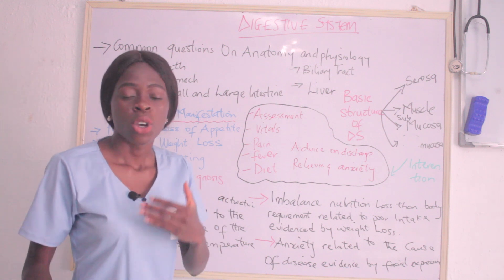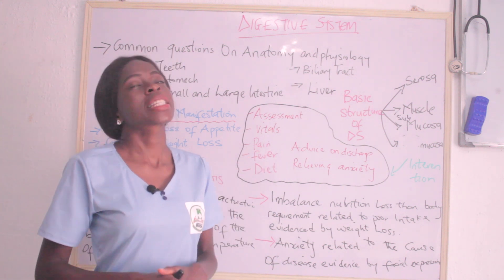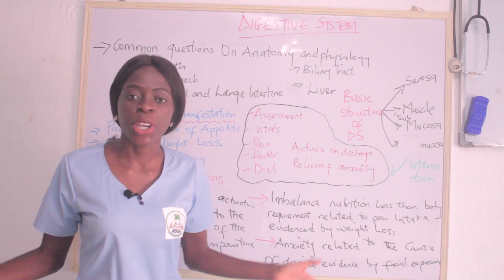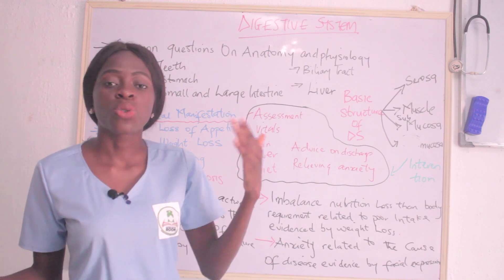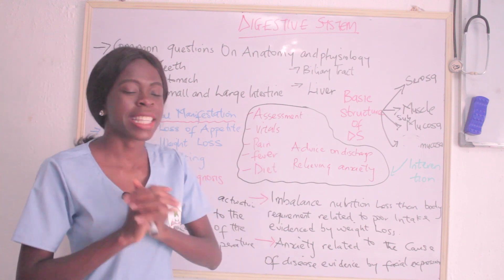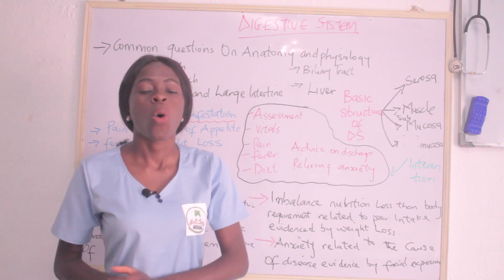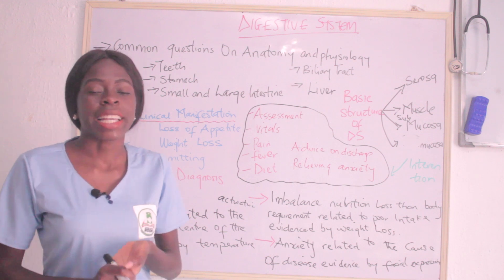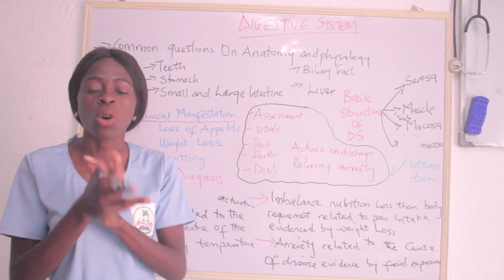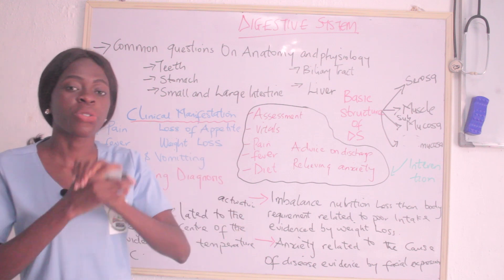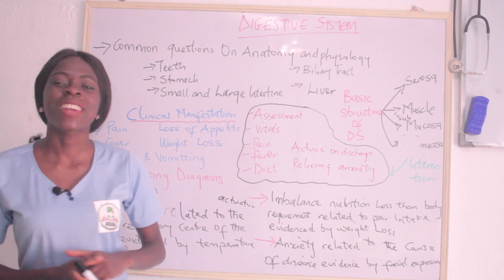Then you manage pain — emphasize how you administer the prescribed medication, provide diversionary therapy, and use cold or hot compress. For fever management, emphasize opening windows, fanning the patient, giving cold drinks, and administering prescribed antipyretics. You also need to address diet — look for alternative sources of nutrition for the patient. Discuss relieving anxiety, and advise on discharge. This is more or less a summary of the digestive system. Take note of these key points, don't forget to subscribe, turn on notifications, and share if you got value. Thank you and have a wonderful day ahead.